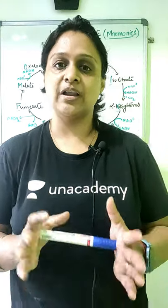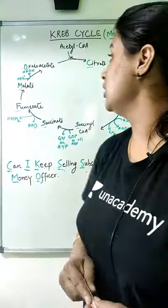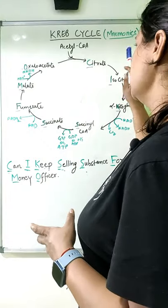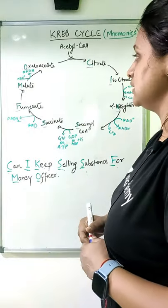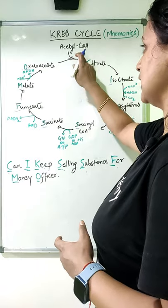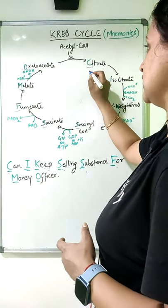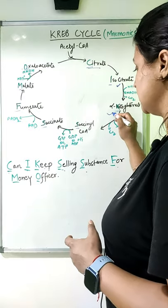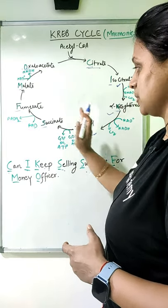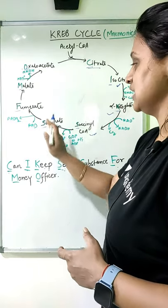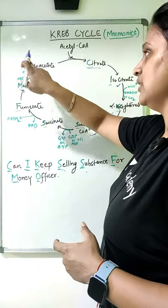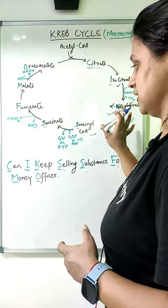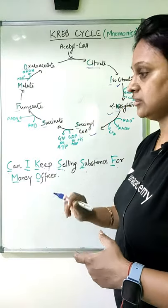Hi guys, this is Khushbu Agarwal and today we are going to see how we can remember the Krebs cycle using mnemonics. We know that in the Krebs cycle, starting with acetyl-CoA, the compounds are: oxaloacetate, citrate, isocitrate, alpha-ketoglutarate, succinyl coenzyme A, succinate, fumarate, malate, and oxaloacetate. This is the cycle which we call the Krebs cycle.